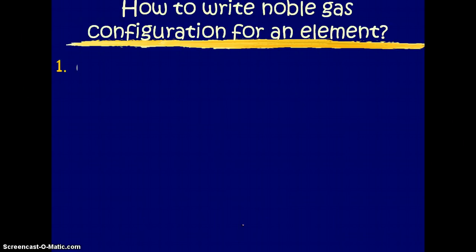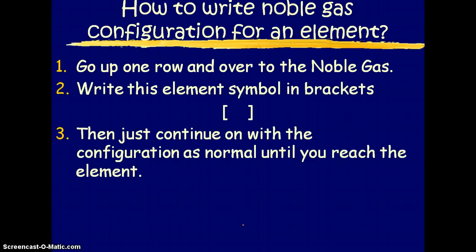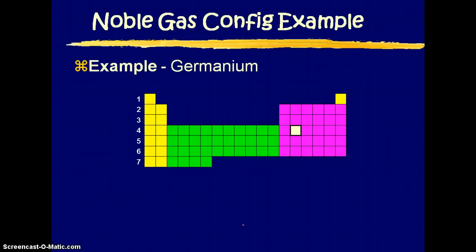All right, so let's look at this. Here are some step-by-step ways to do it. So you're going to go up one row and over to the noble gas. Write the element, the noble gas element symbol in brackets. Then you're just going to continue on with the configuration as normal until you reach the actual element you're looking at.